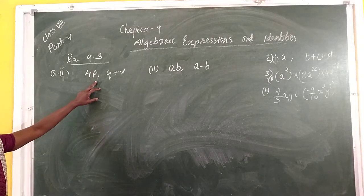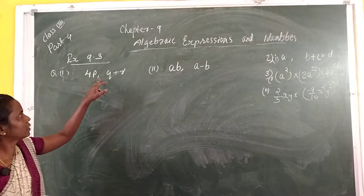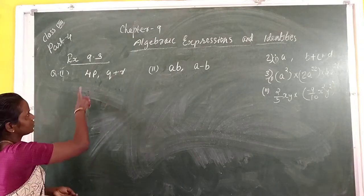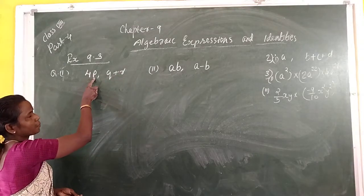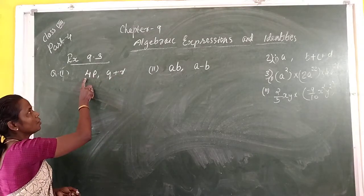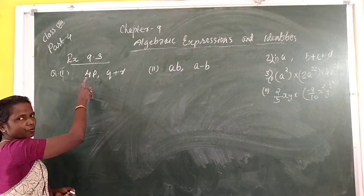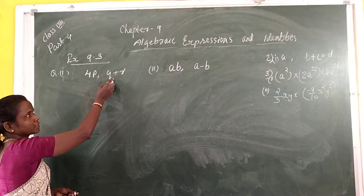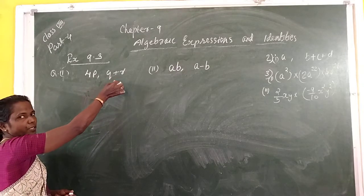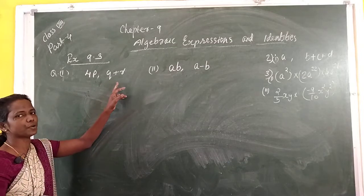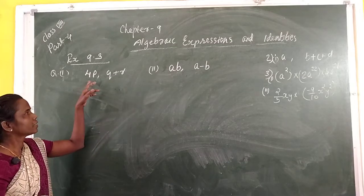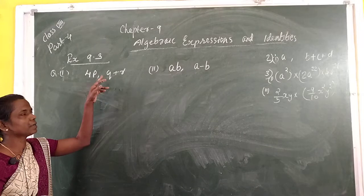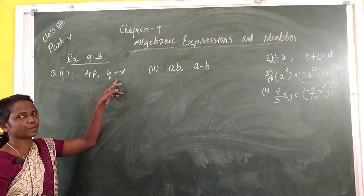First question: 4P multiplied by Q plus R. Here, 4P is a monomial — only one term. The second expression, Q plus R, has two terms, so it is a binomial. So here we have monomial multiplied by binomial.